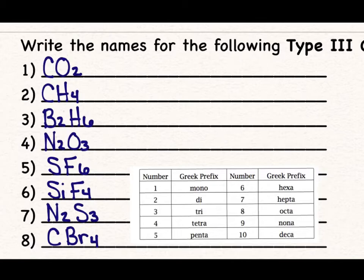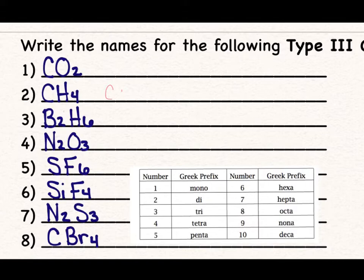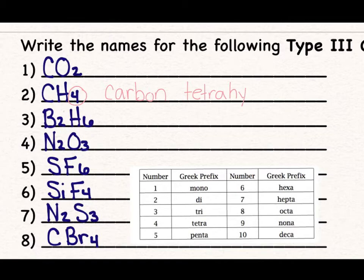Now let's look at examples where you write names based off of the formula. The key thing to remember is that the number of atoms corresponds to the prefix for that element. For example, with CH4: there's only one carbon — when it's the first element, we never use the prefix mono, so we just write carbon. We have 4 hydrogens; the prefix for 4 is tetra, and hydrogen changes to hydride, so it's carbon tetrahydride. The common name is methane, but we won't use common names here.